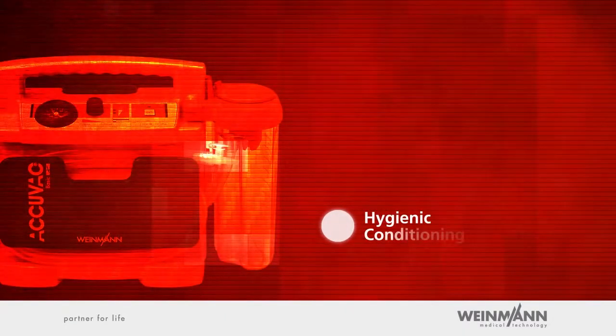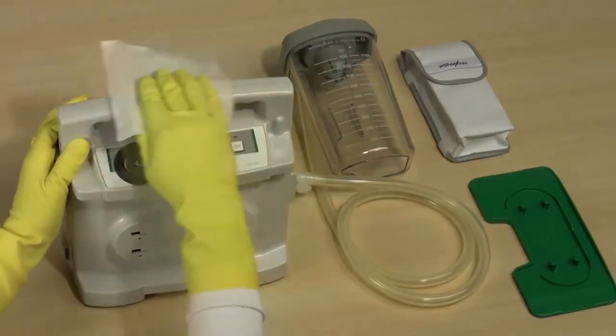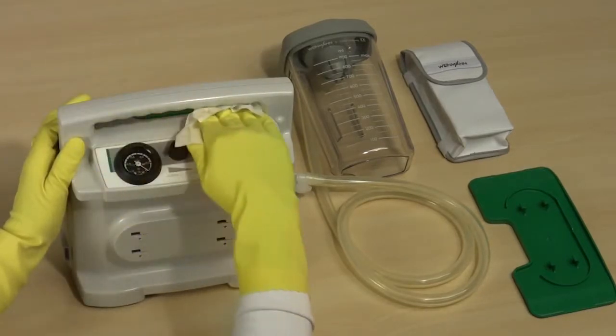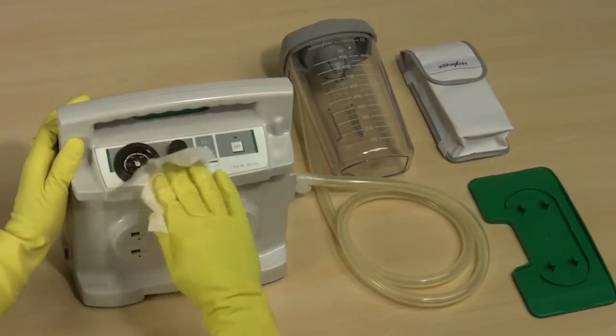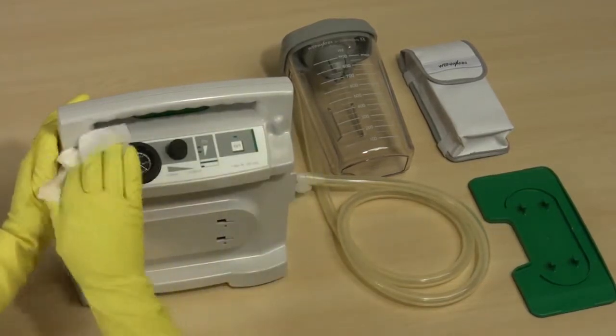Hygienic conditioning. The AcuVac Basic motor unit can be cleaned with a wipe disinfectant. However, before you use the disinfectant, use a moist cloth to remove all visible contaminants from the surface.